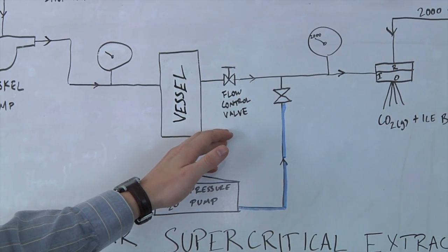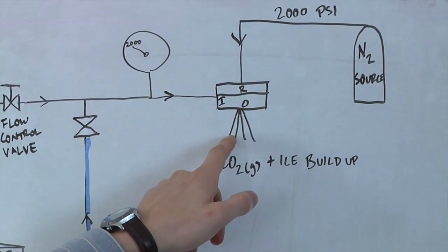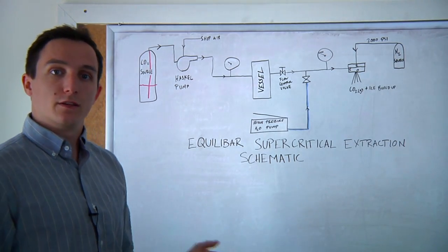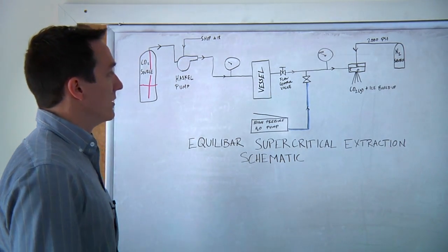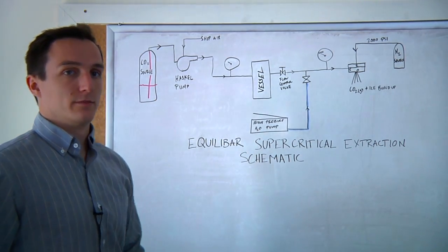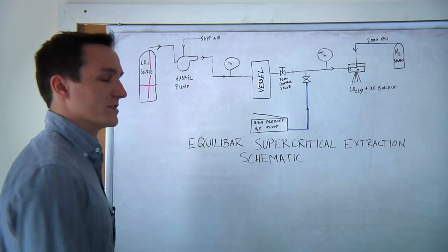From there, we have a flow controlling valve, and in this particular setup, the Haskell pump and the Equilibar both generate pressure. In this case, the Equilibar generates pressure on the inlet, and the Haskell is on the outlet. So you need some DP device to have constant flow throughout the system. So that's what our flow controlling valve does. But again, in your particular setup, it could be different.